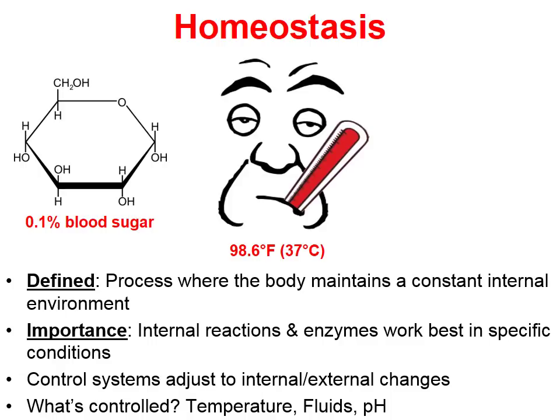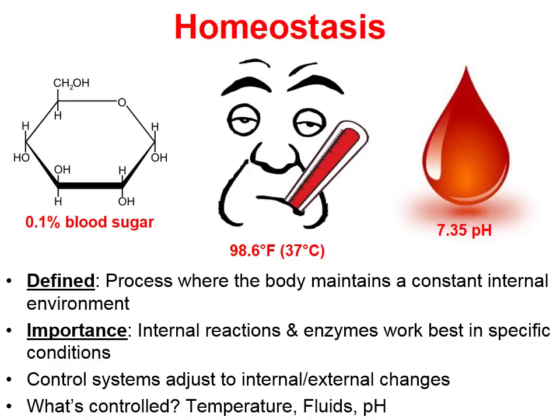Our blood sugar's percentage is about 0.1% of our blood. If that gets too high or too low, we can suffer side effects. Same with blood pH — a pH of 7.35. If our blood pH gets too high or too low, we can suffer side effects as a result of that.